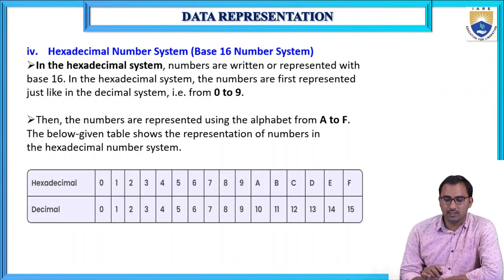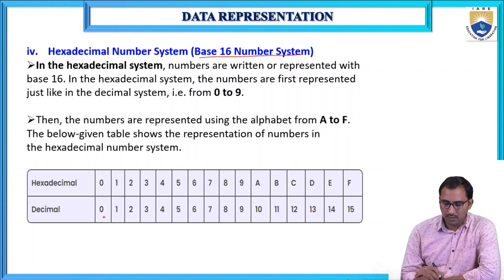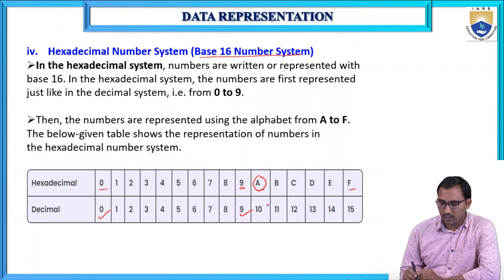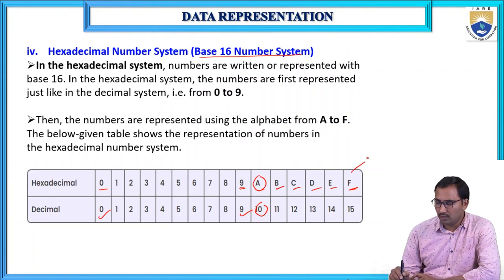The hexadecimal number system is called the base-16 number system. Using it, we can represent numbers from 0 to 9 and then A to F. A corresponds to 10 in decimal, B to 11, C to 12, D to 13, E to 14, and F to 15. So in total, we have 16 values.